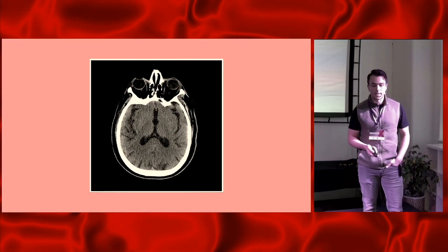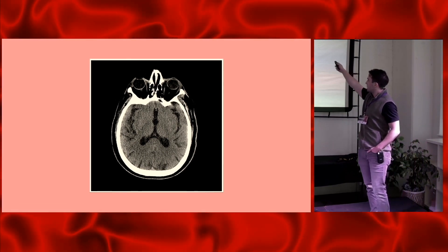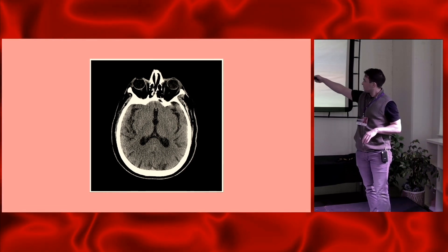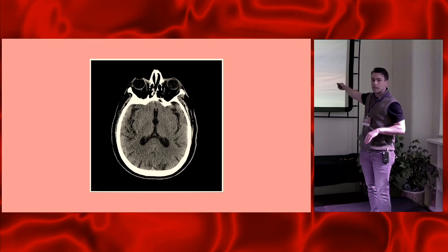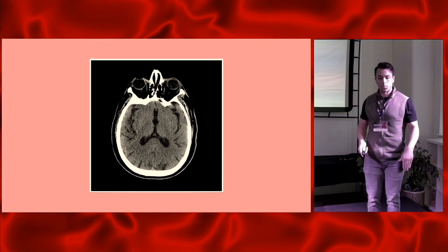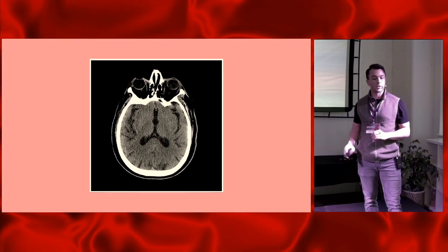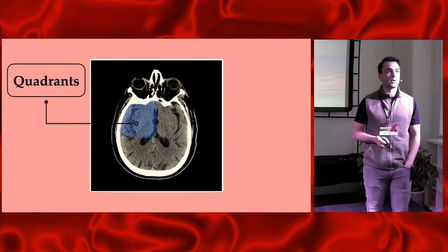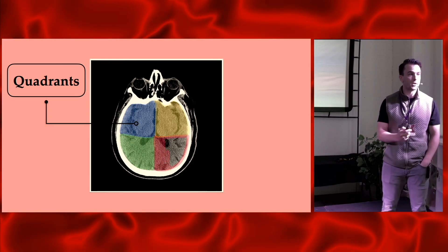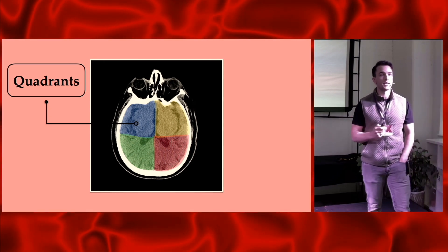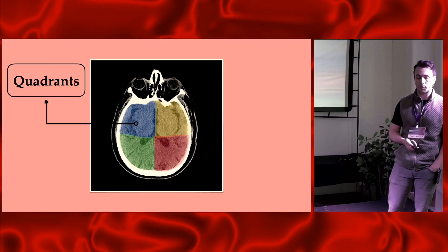On an axial CT cut, the top of the screen is the front of the patient's face, the left of the screen is the patient's right side. You're imaging from the patient's feet up to their head as you scroll through. I like to use the quadrant approach: break the brain into quadrants, scan back and forth, and compare both sides to see if they're similar — looking for differences, mass effect, or effacement.